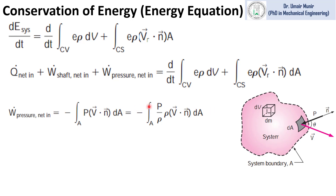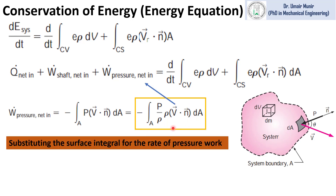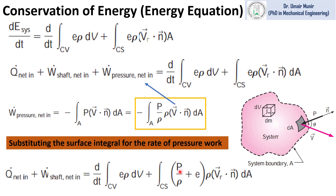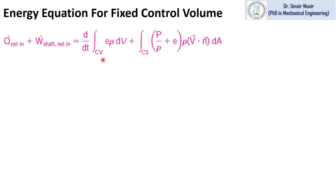We can multiply and divide by rho without affecting the equation. We then substitute this expression for the rate of doing work by pressure force back into the energy equation, and combine the two area integrals, since rho V dot N delta A is common between them. This gives us the energy equation in its combined form.